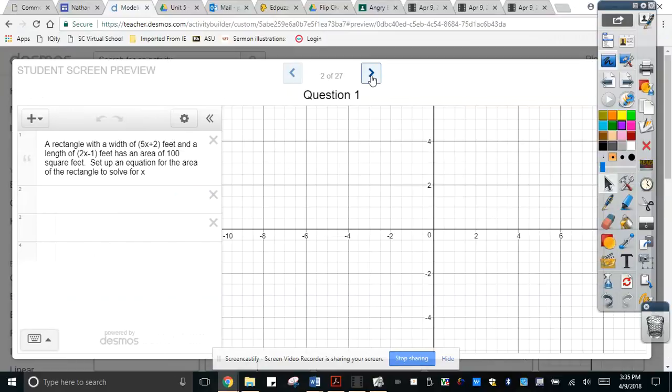So first, a rectangle with a width of 5x plus 2 feet and the length of 2x minus 1 feet has an area of 100 square feet. So what we need to do here, we need to type in y is equal to... what is the meaning of this one here? We have a rectangle here. This is the length and this is the width. The length here, according to the problem, is 2x minus 1 and the width here is 5x plus 2.